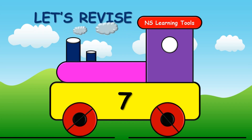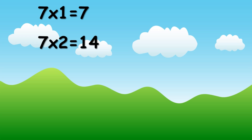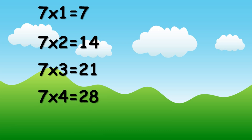Let's revise. Seven ones are seven. Seven twos are fourteen. Seven threes are twenty-one. Seven fours are twenty-eight. Seven fives are thirty-five.